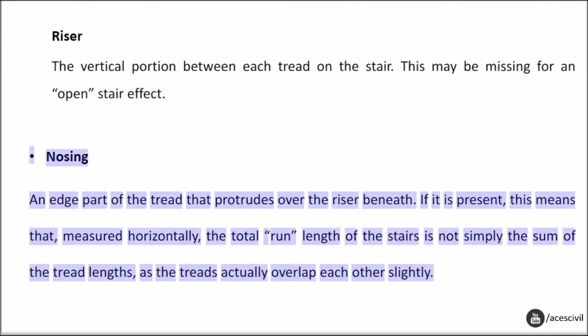The nosing is an edge part of the tread that protrudes over the riser beneath. If it is present, this means that, measured horizontally, the total run length of the stairs is not simply the sum of the tread lengths, as the treads actually overlap each other slightly.